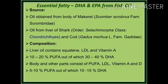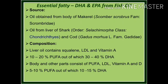Sources of fish oil include oil obtained from the body of mackerel (family Scombridae), and oil from the liver of shark (order Selachii) and cod. The composition of liver oil contains squalene, LDL, and vitamin A, with 10 to 20 percent PUFAs of which 30 to 40 percent is DHA. Body oils contain LDL, vitamins A and D, with 5 to 10 percent PUFAs of which 10 to 15 percent is DHA.